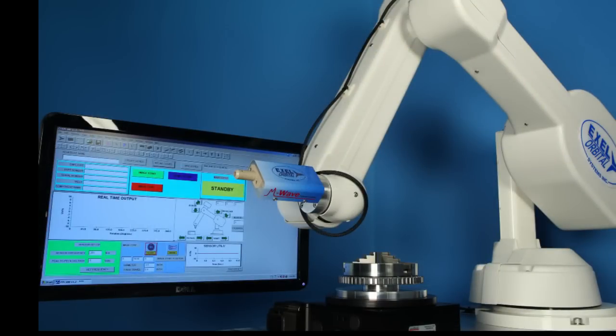Xcel currently makes orbital imaging systems capable of scanning components as large as 3 inches in diameter, with much larger diameters possible.